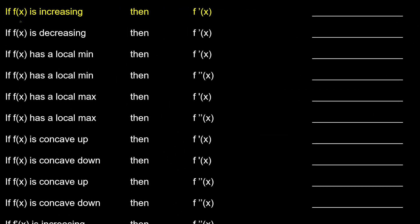Our first statement is: if f of x is increasing, then its derivative is what? Remember tangent lines — their slopes represent the instantaneous rate of change. So if a function is increasing, that means its tangent line slope must be positive. And because the slope of the tangent line represents a derivative, if it's positive, we can represent that with greater than zero. Similarly, if we're dealing with a function that's decreasing, then its derivative must be negative — less than zero.